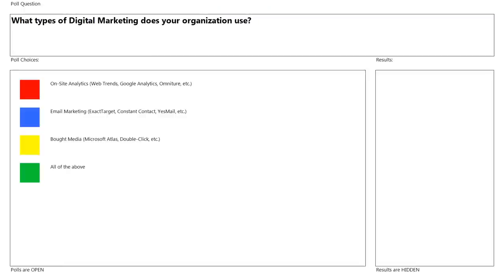Before we get into the solution, I want to ask the audience what kind of digital marketing your organization uses. From an on-site analytics perspective, do you use WebTrends, Google Analytics, Omniture, or IIS logs? Do you use email marketing tools like ExactTarget, Constant Contact, or YesMail? Do you use ad media platforms like Microsoft Atlas or DoubleClick? Or a mix of all of the above? Seems like a majority of you either use a mix of these, or if there is a focus, it's on on-site analytics — so that's great.